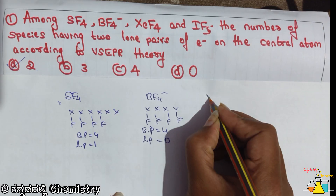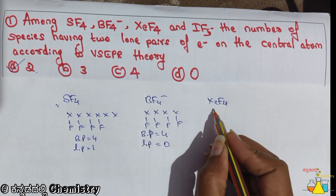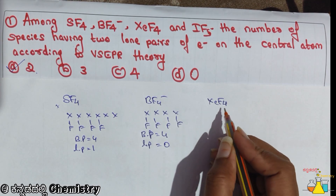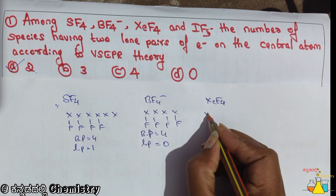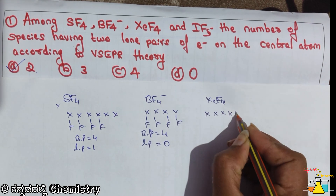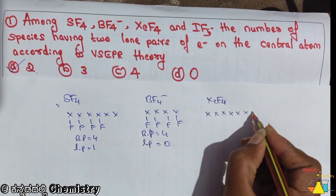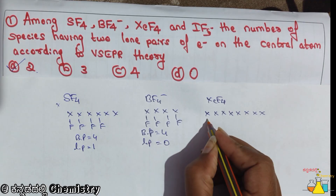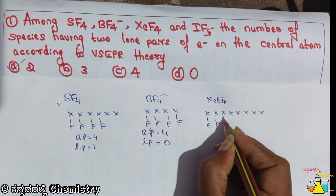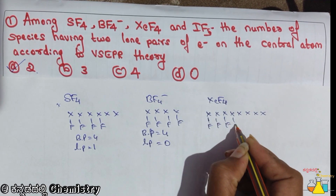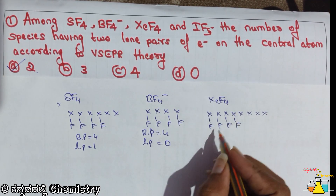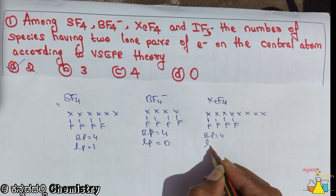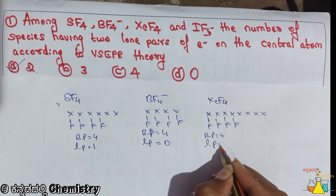Next question is XeF4. XE is 8 electrons: 1, 2, 3, 4, 5, 6, 7, 8. Fluorine is 4: 1, 2, 3, 4. So 4 fluorine atoms. The bond pairs is 4, and lone pairs is equal to 2.